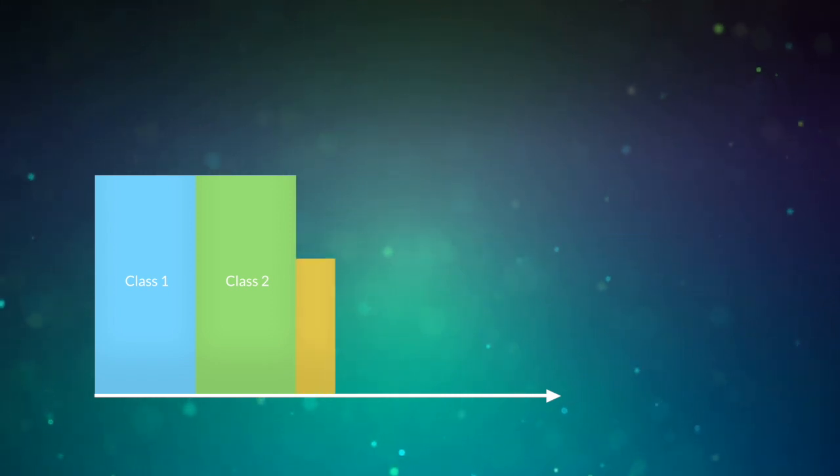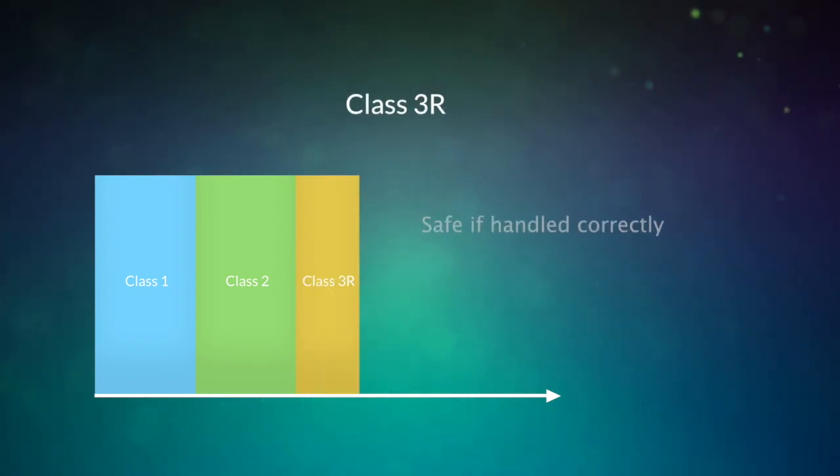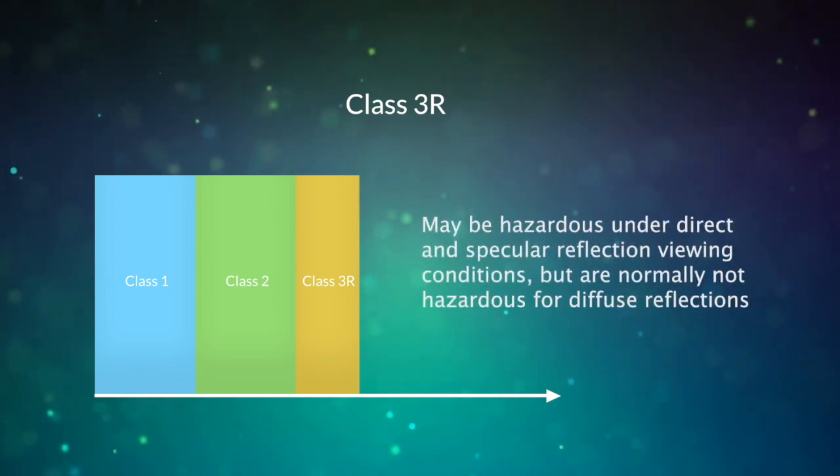Class 3R lasers are considered safe if handled correctly. For visible light, Class 3R lasers are limited to 5 milliwatts continuous emission. Class 3R lasers may be hazardous under direct and specular reflection viewing conditions but are not normally hazardous for diffuse reflections.